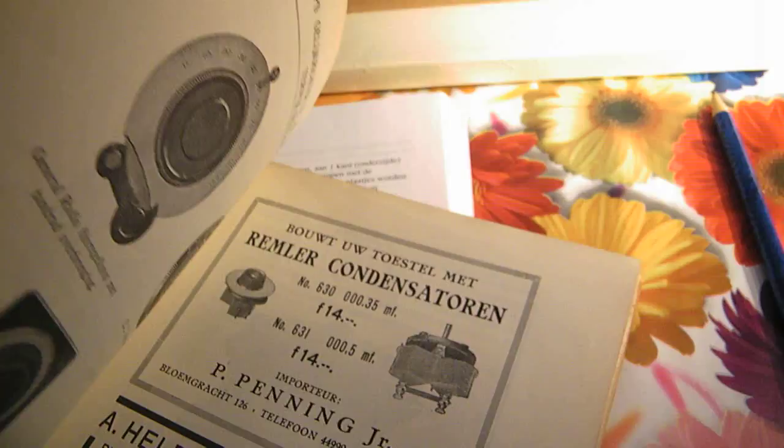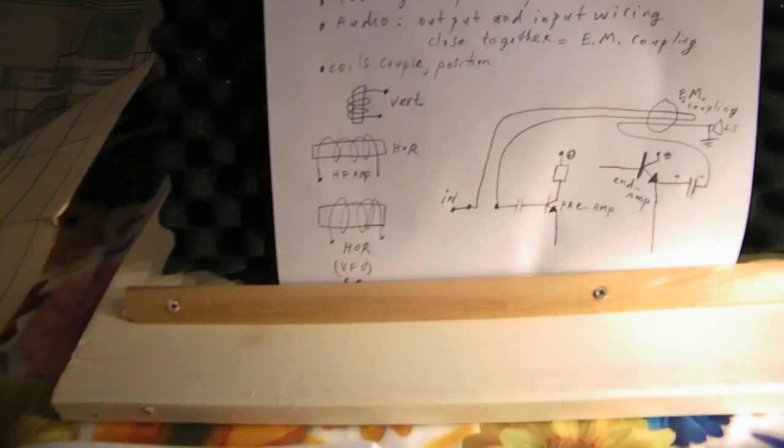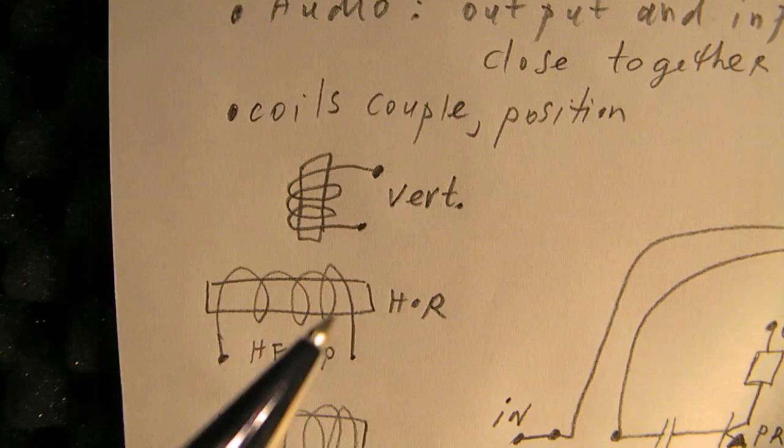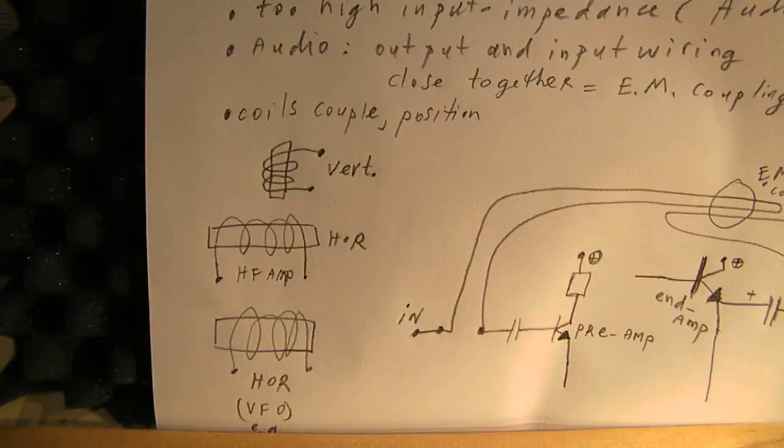And you can also see in old school radio circuits, for instance from this book, that coils are mounted all in a certain angle, say 45 degrees, to prevent that they couple electromagnetically.